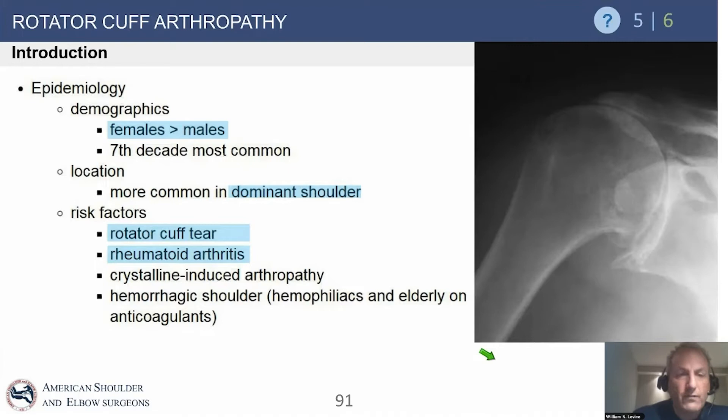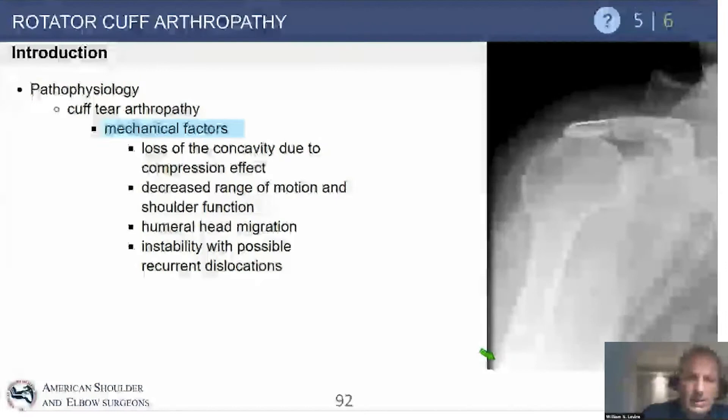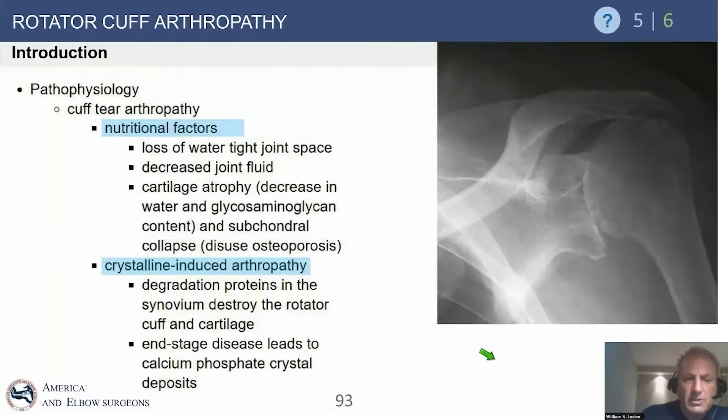Usually females greater than males in the seventh decade of life are more commonly affected, and it's more common in the dominant shoulder, although we see many patients with bilateral disease. They have massive cuff tears. Rheumatoid disease is a risk factor, as are crystalline-induced arthropathies and hemophiliacs. There are mechanical factors, nutritional factors, and crystalline-induced arthropathy — all of these can have a multifactorial impact on the glenohumeral joint.